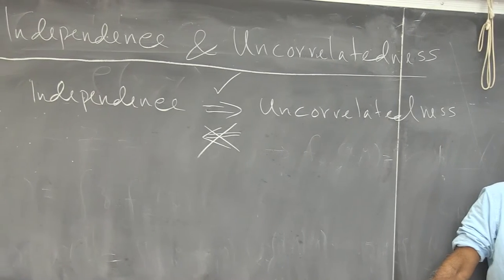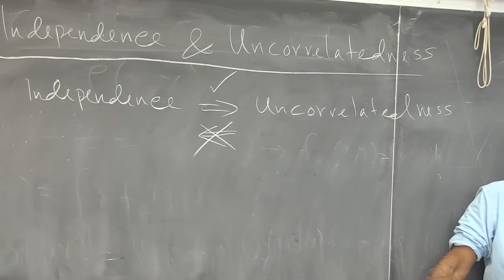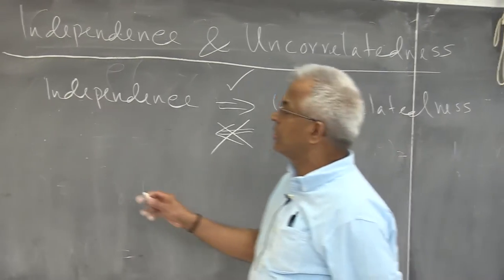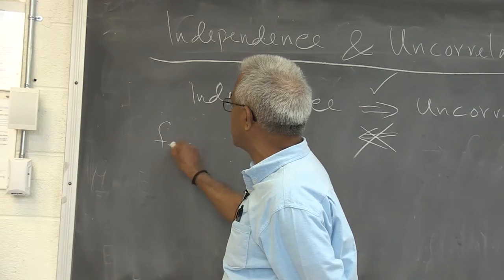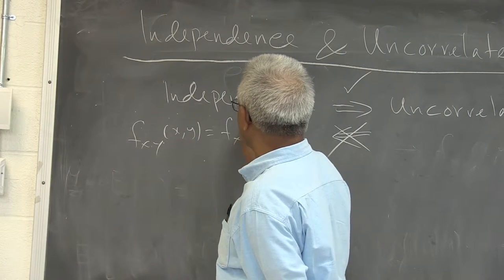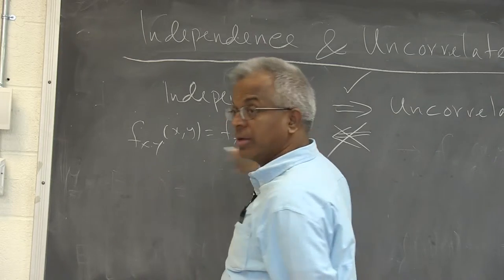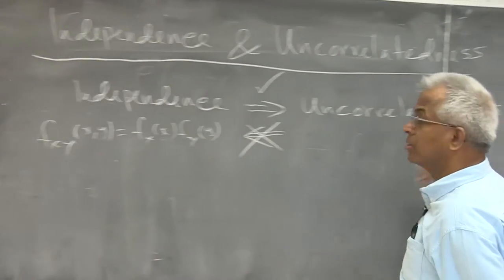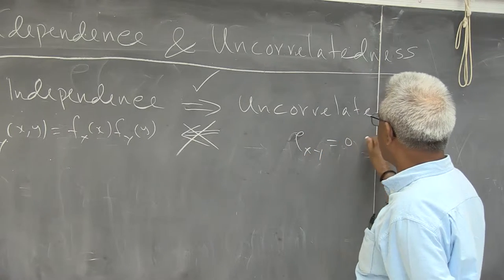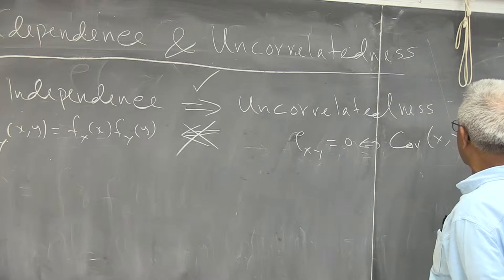Let us look at these two concepts one more time: independence and uncorrelated random variables. Two random variables — what is the condition for independence? You have to show that the joint density function is the product of the individual density functions. What do you mean by uncorrelated? All you need to show is that rho(x,y) is 0, which is the same as covariance of x,y is 0.